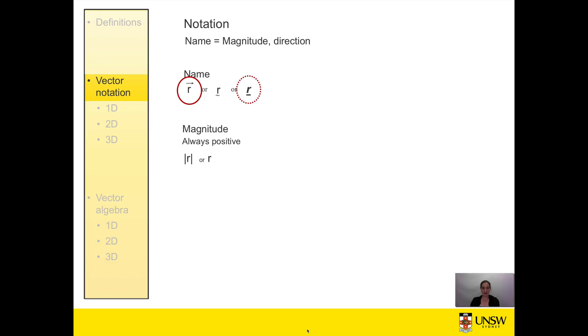The vector magnitude is an absolute value so it's always positive. As such it's written using either the absolute value notation or just as plain text. I will always use the absolute value notation just because I personally find that to be a little bit clearer.